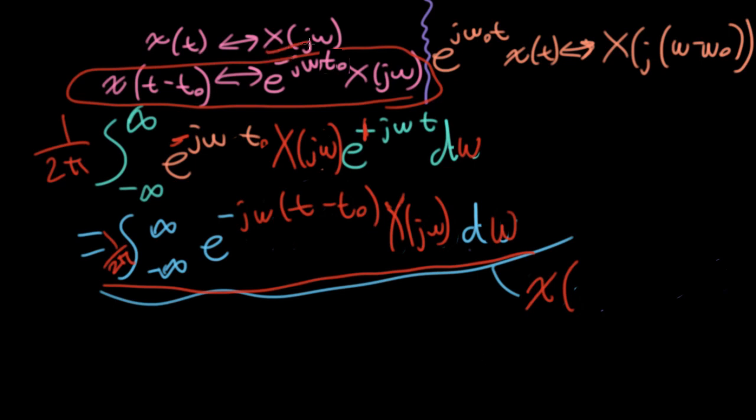So it's the inverse transform of big X, which is x, but now it's evaluated at t minus t naught. So that's an alternate proof to the proof we did the last time. The last time, a couple of lectures ago, we put x(t minus t naught) into the forward integral. Here we are putting this e to the minus j omega naught t times big X(j omega) into the inverse Fourier transform integral to have a proof more along the lines of what we just did.